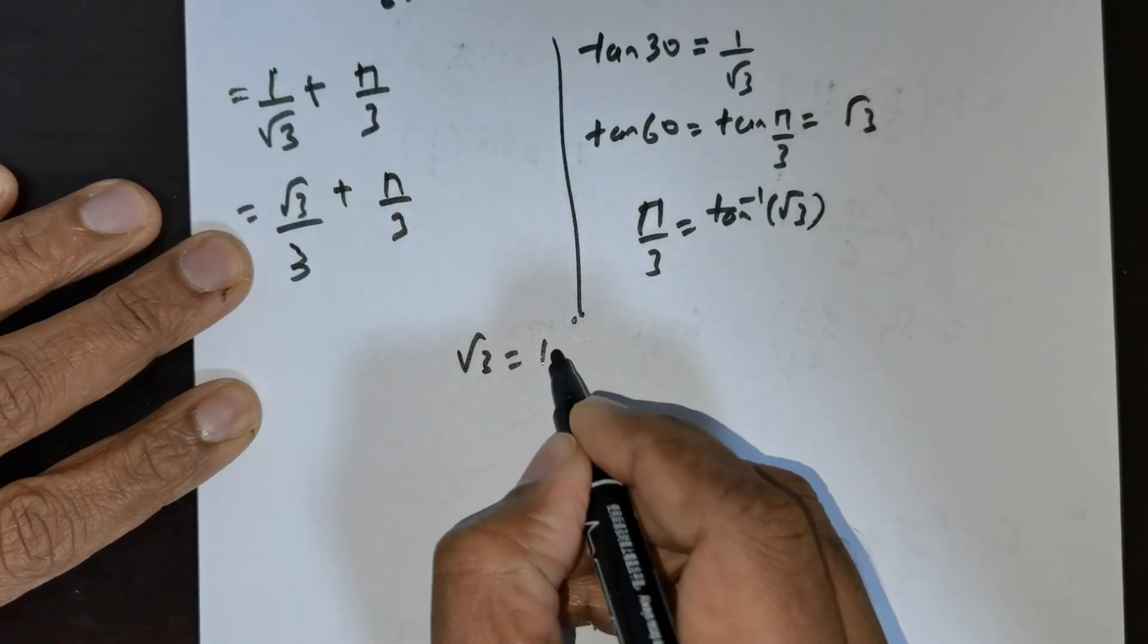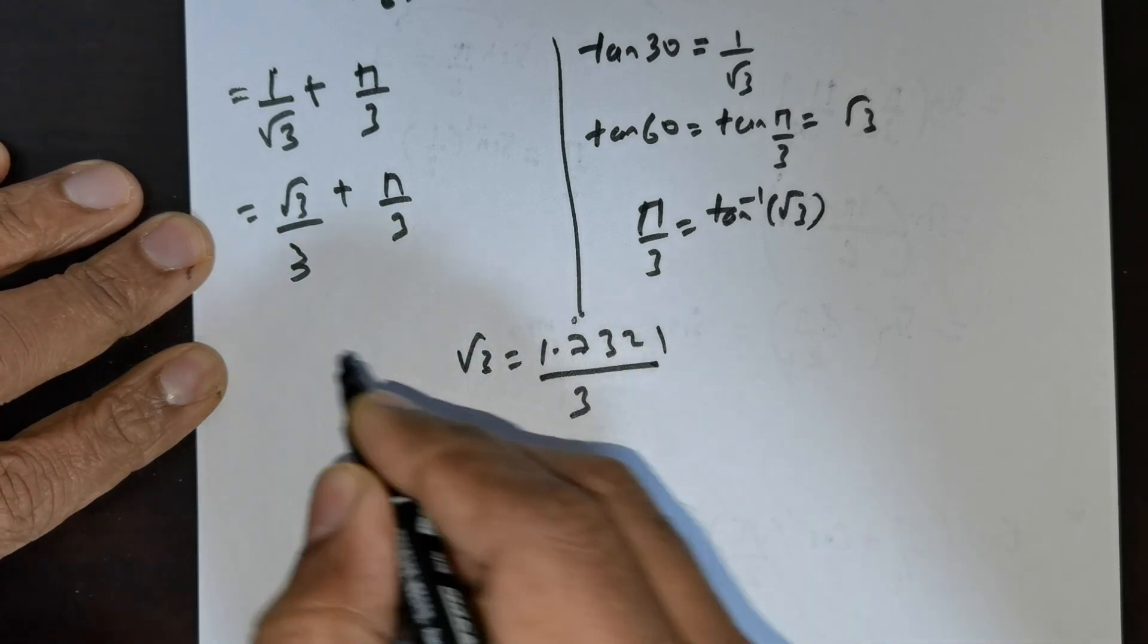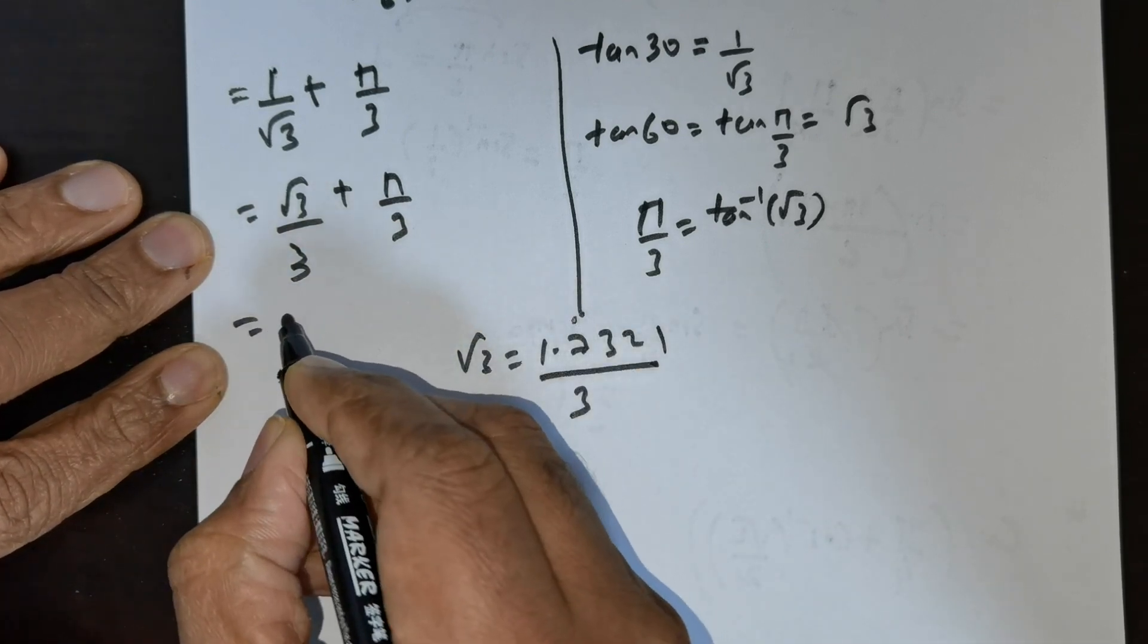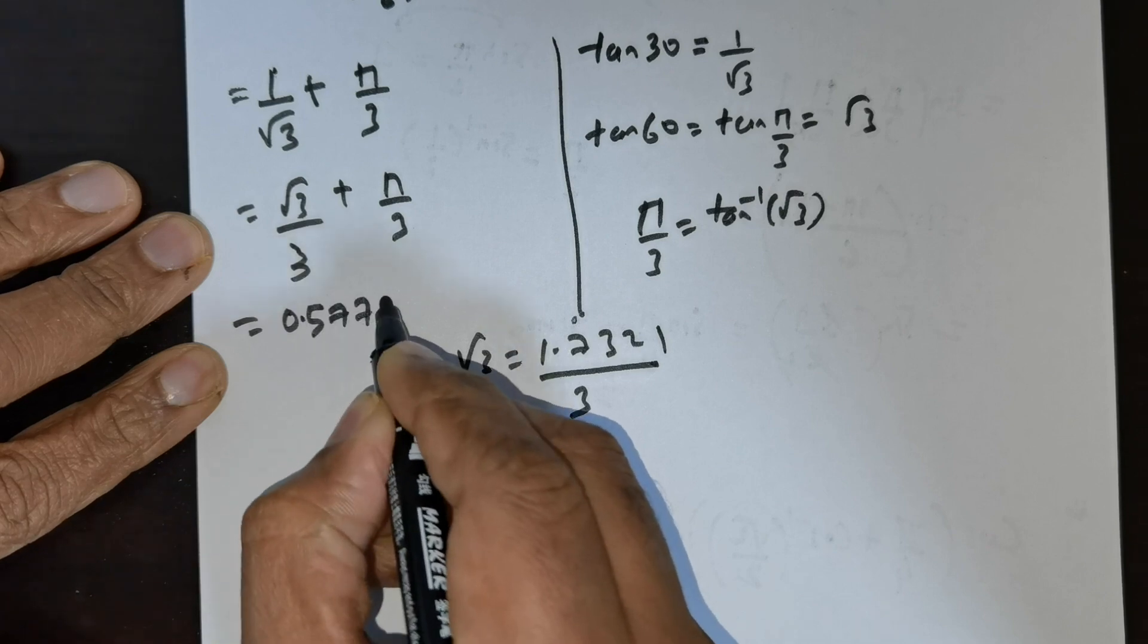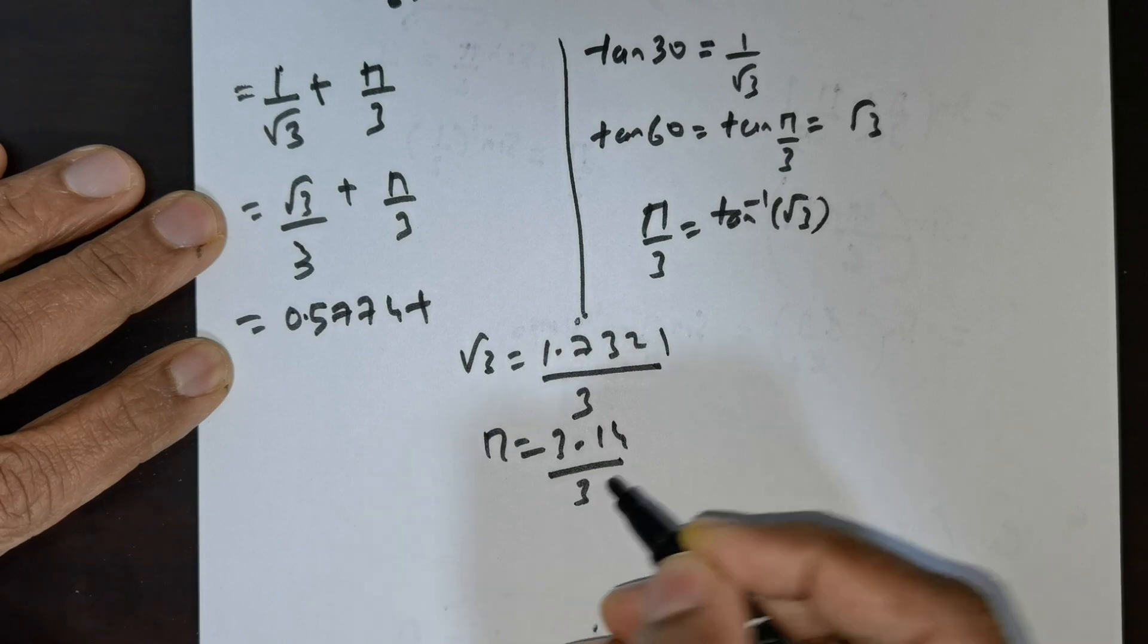Now root of 3 is 1.7321. You divide that by 3. If you divide that by 3, you'll get a value of 0.5774. The value of pi is 3.14. You divide that by 3.